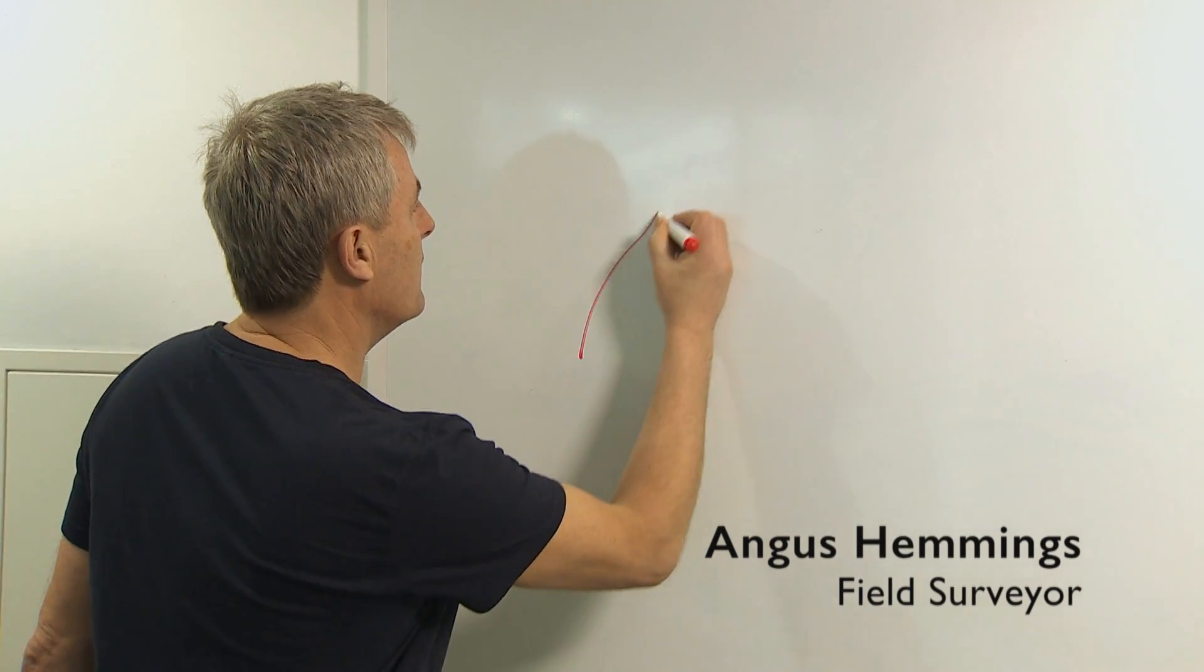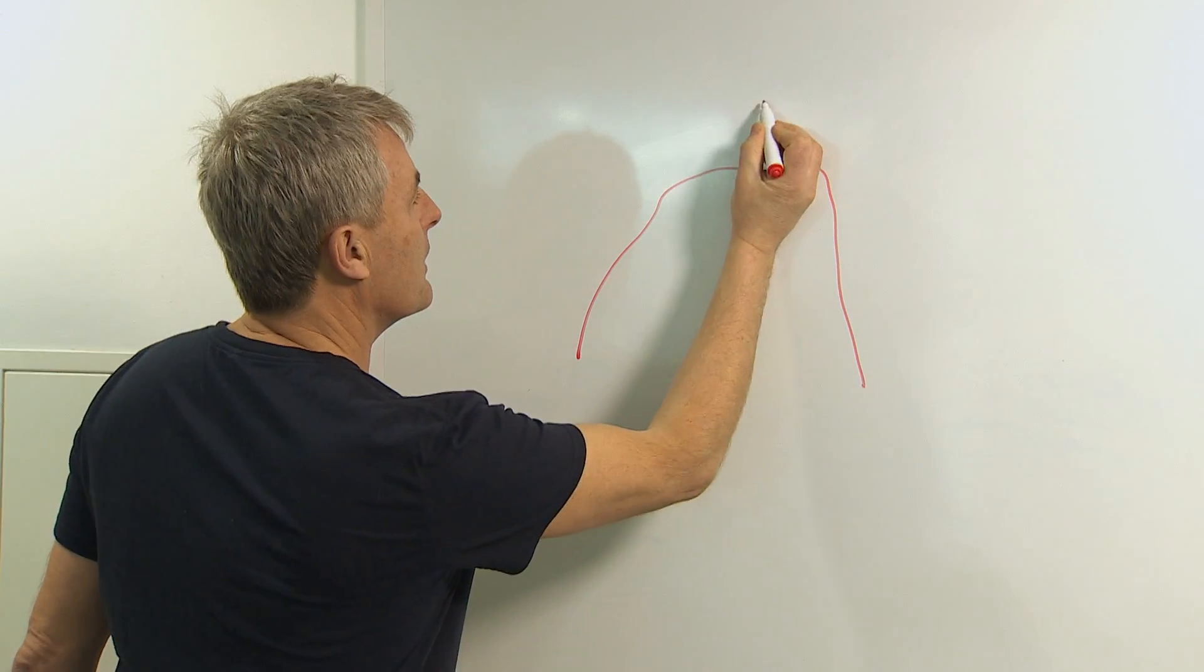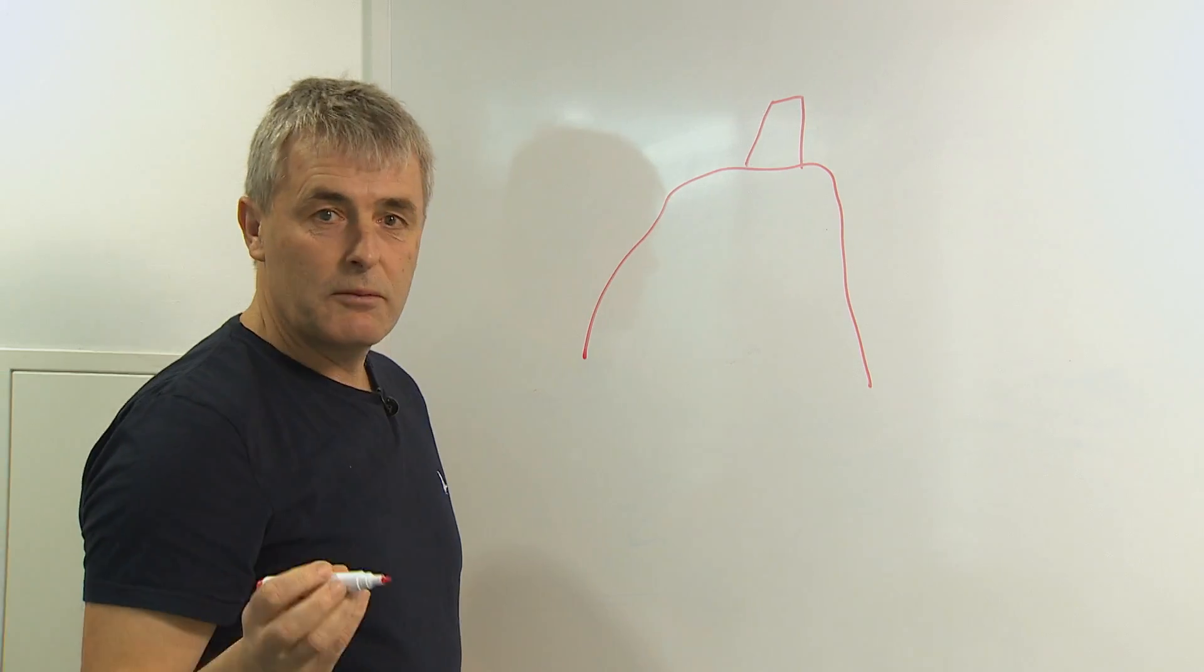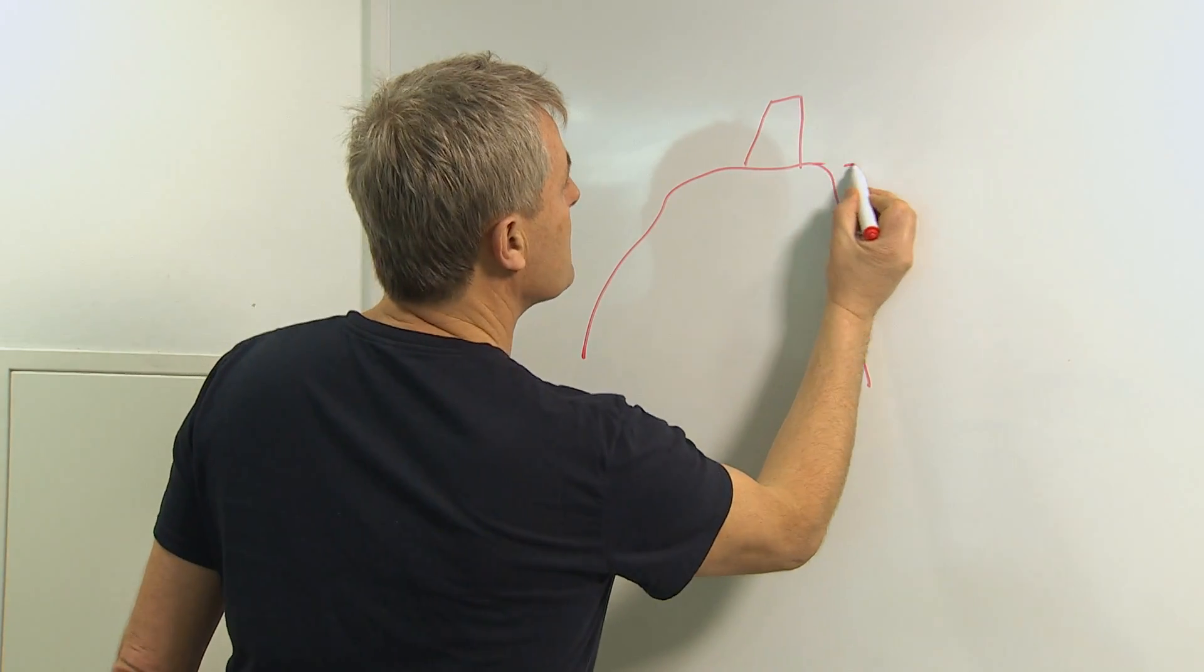So how do we go about showing the height of a hill on our mapping? Normally you have a mountain and sitting on top of the mountain you have a triangulation pillar, and we would show the height of the hill at the base of the pillar.